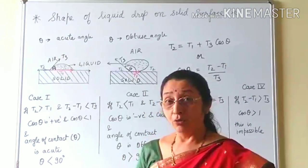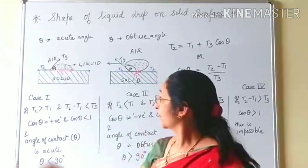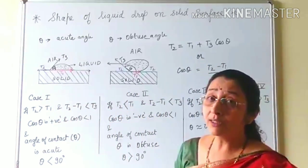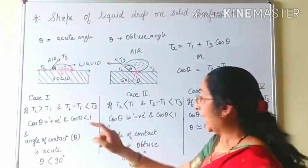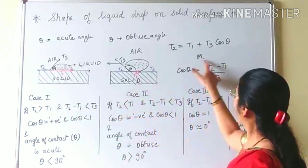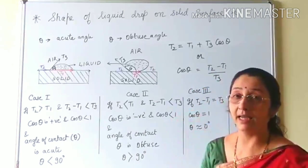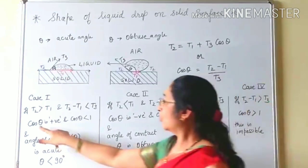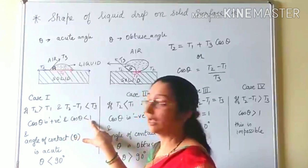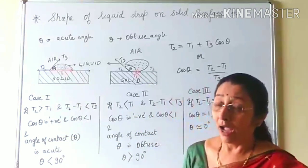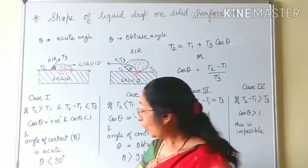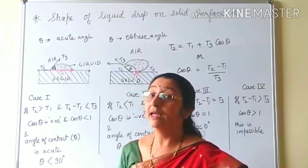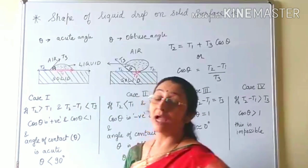Case 1: T2 is greater than T1. Here T2 minus T1 is positive but less than T3, so the numerator is smaller than the denominator. Therefore cos θ is positive and less than 1, which means θ is an acute angle. The drop forms with an acute angle of contact.